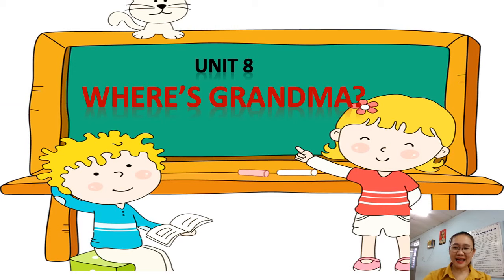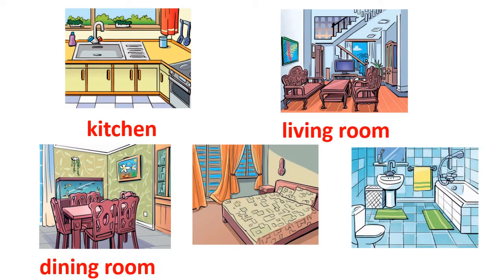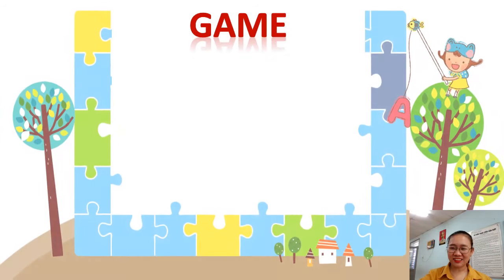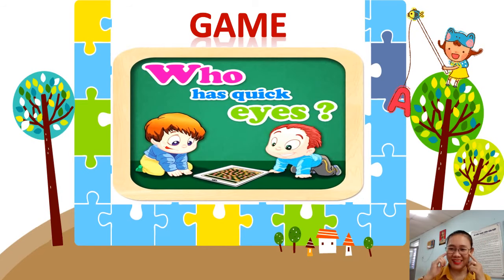In Unit 8, 'Where's Grandma?', we study about rooms in a house. Let's review: kitchen, living room, dining room, bedroom, and bathroom. And now, to check if you can remember all the words, let's play the game 'Who Has Quick Eyes'!